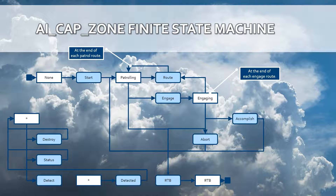Let me clarify quickly the symbology of this diagram. The white boxes are states, meaning the process during execution will be in a certain state at a certain time. The light blue boxes are what we call events. Events trigger state transitions — for example, if we execute start, then the process will transition from the non-state to the patrolling state.